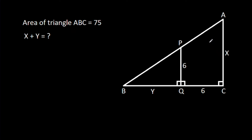In this video, we have been given: area of triangle ABC is 75, angle ACB is 90 degrees, PQ is perpendicular to BC, PQ is 6, CQ is 6, AC is X, BQ is Y. We have to find X minus Y.